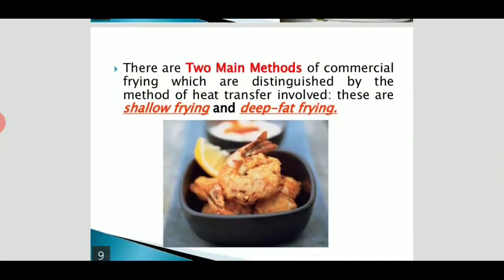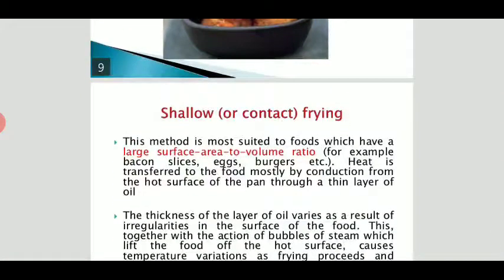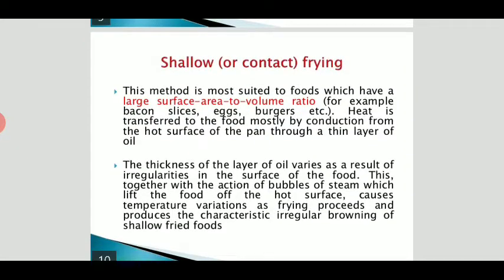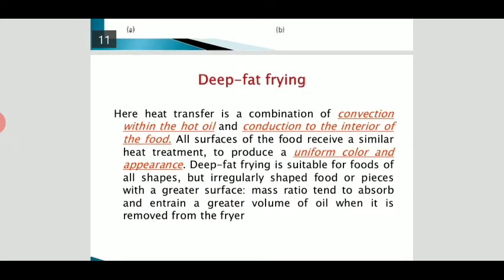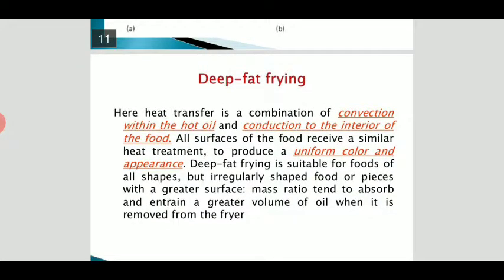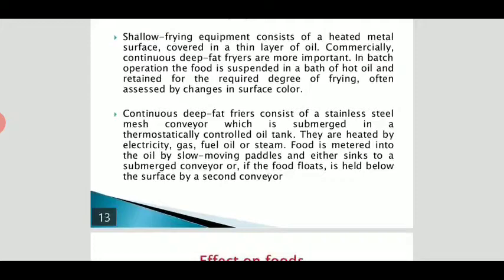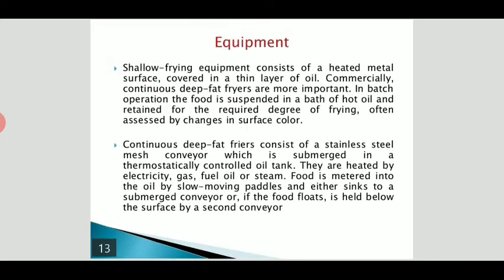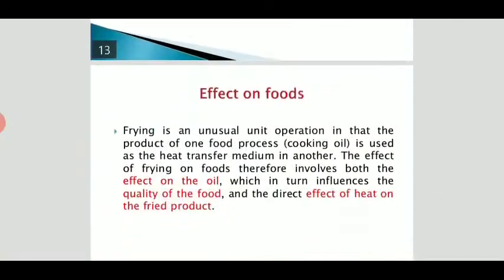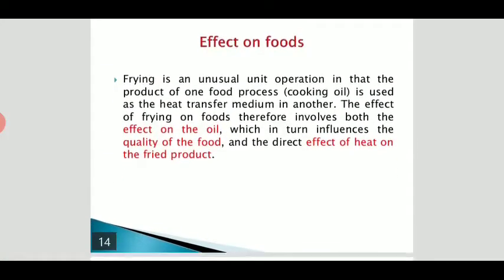There are two methods of frying: shallow frying and deep frying. In shallow frying, only one side surface is in contact with the oil, and you have to keep turning the food. In deep frying, the whole food product is submerged in oil and is being interacted with the oil from all directions. That changes the appearance and color of the food, and in deep frying there is uniformity in the color.